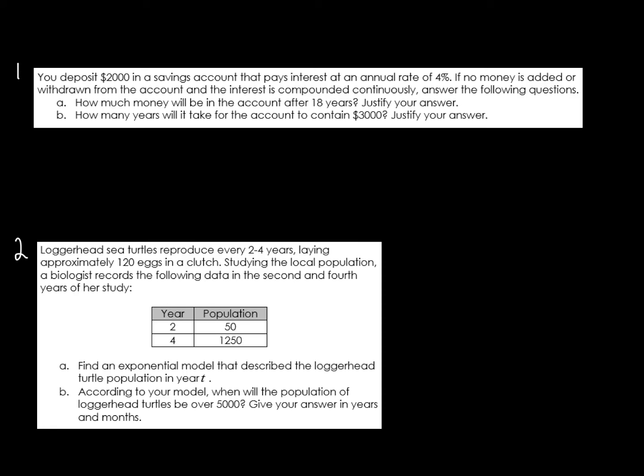So here are the two problems. You deposit $2,000 in a savings account. It's paying you interest, the annual rate of 4% per year. And if no money is added or withdrawn from the account, and interest is compounded continuously, you want to answer the following questions. How much money will be in the account after 18 years? Justify your answer. And how many years will it take for the account to contain $3,000? Justify your answer.